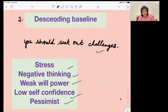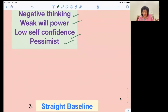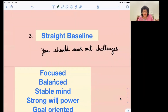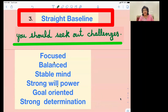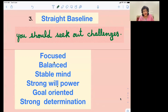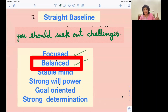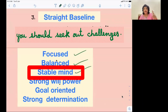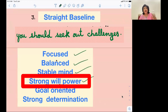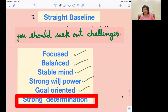Now let's come to the third type of baseline — the straight baseline. You can see that the writer starts from a point and ends at the same level. Those who have a straight baseline in their handwriting are more focused and balanced. They have a stable mind, strong willpower, are goal-oriented, and have strong determination.